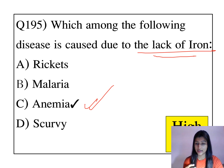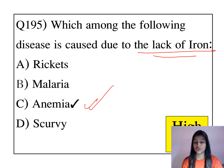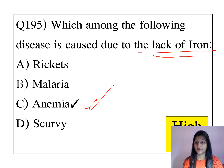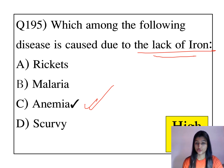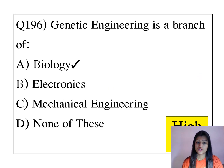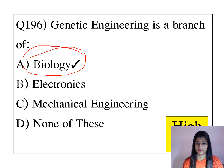Generally, anemia is a common problem in India, due to the menstrual cycle and pregnancy also. So this is caused due to lack of iron. Genetic engineering is a branch of biology.